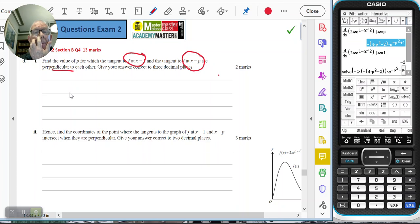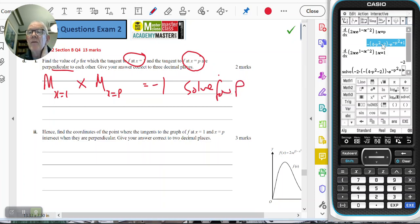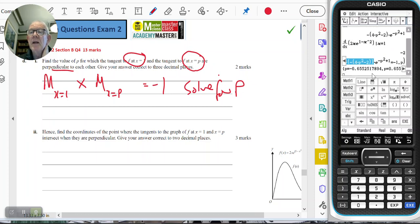I want the gradient when x equals 1 times the gradient when x equals p to equal negative 1, and then solve for p. I've taken this and multiplied it by negative 2 to give me this. I've set it equal to negative 1, solve for p, and I get two answers.